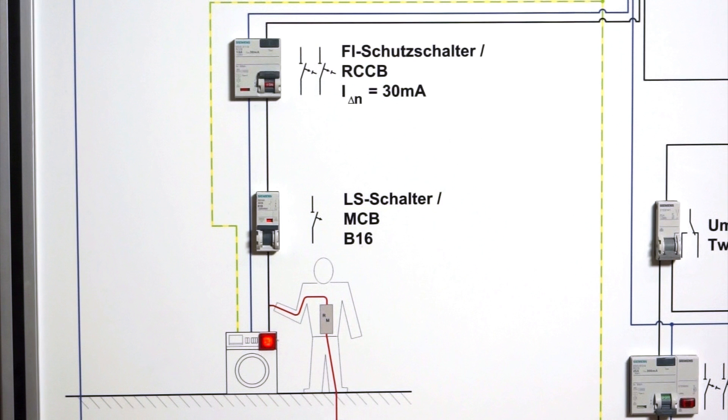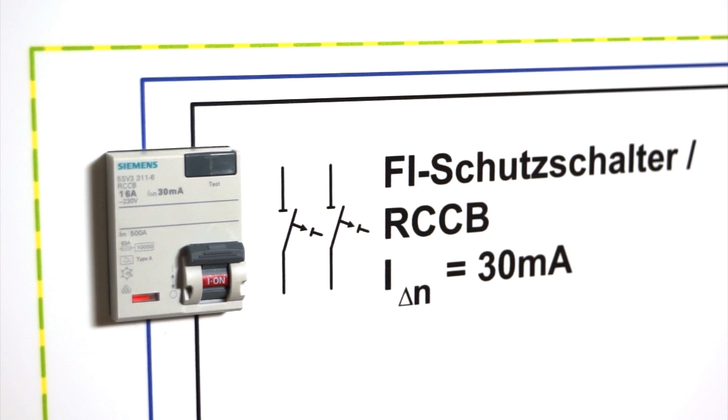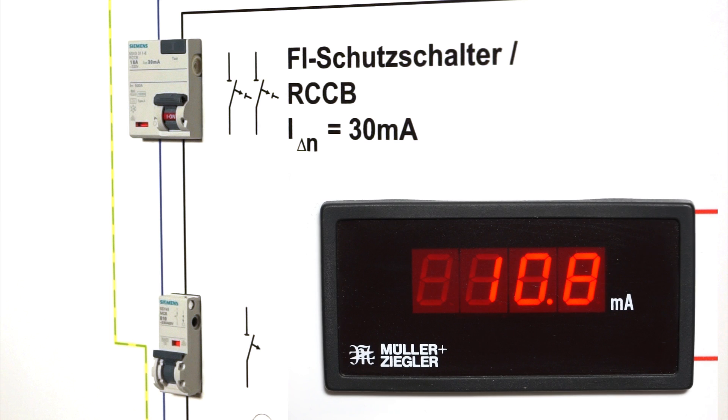What you can see is a fault current generated by somebody coming into direct contact with a live component. Such currents pose a risk to personal safety from as little as 30 milliampere. The tripping range of the RCCB is between 15 and 30 milliampere.